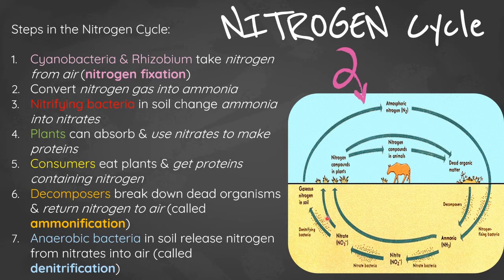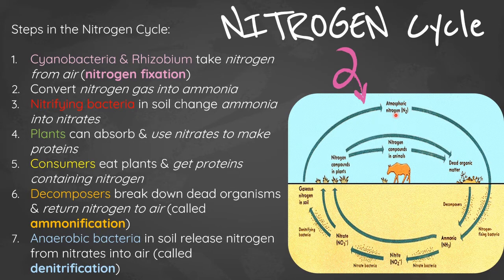Plants can absorb and use the nitrates formed by nitrifying bacteria to make proteins, and consumers eat plants to get proteins that contain nitrogen. When plants and animals die, decomposers break down the dead organic matter, releasing ammonia, which is eventually returned to the air as nitrogen gas. This process is called ammonification.